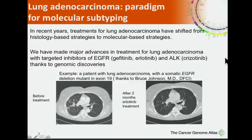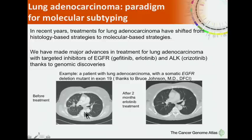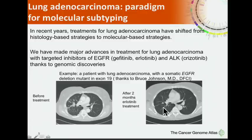My group was fortunate to participate, with Bill Sellers, Bruce Johnson, and I, in the discovery of EGFR mutations in 2004, along with the Pao and Varmus group and the groups of Tom Lynch and Daniel Haber. Shown here as one example is a patient with lung adenocarcinoma with a somatic EGFR deletion mutant in exon 19 — multiple nodules in the right lung visible on CT — and then complete clearing of these nodules after two months of erlotinib treatment.